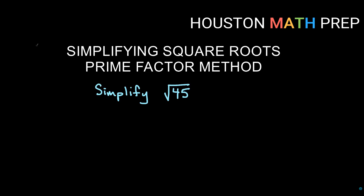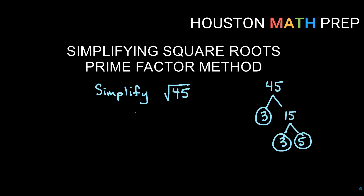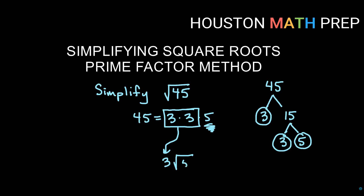Let's do another one — square root of 45. We're doing the same problems as the other video so you can watch both and decide which method you prefer. Starting our factor tree with 45: thinking of something small, like 3, and 3 times 15 is 45. 3 is prime, so we stop there, but 15 breaks down into 3 times 5, both prime. So 45 equals 3 times 3 times 5. I have a pair of 3s, so a single 3 comes outside. The 5 stays inside, giving us 3 times square root 5.